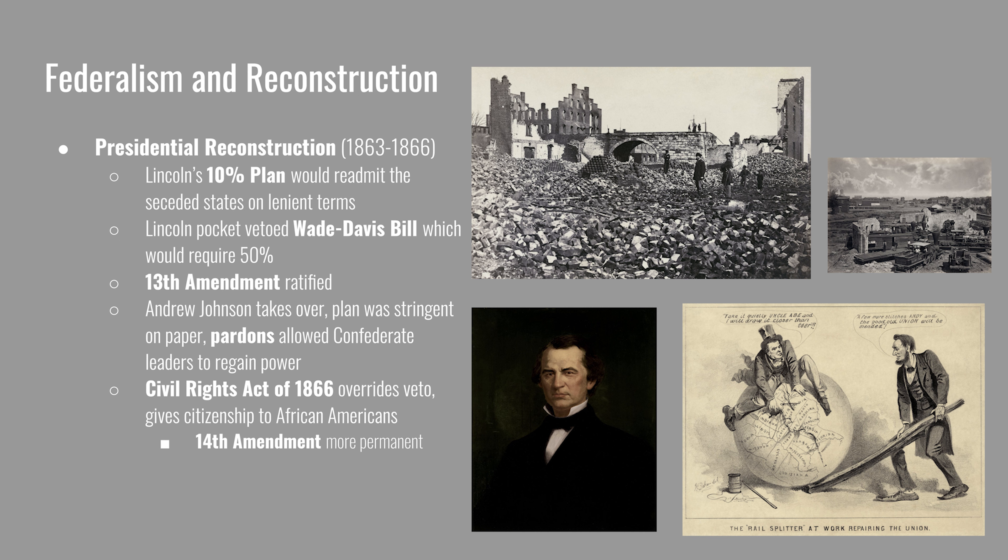Congress grew annoyed with Andrew Johnson and took control over Reconstruction. In June of 1866, Republicans in Congress refused to seat the Southern representatives and senators who had been re-elected — many were former Confederate officials. Congress then passed the Reconstruction Acts of 1867, dividing the South into five military districts overseen by Secretary of War Edwin Stanton. Before states could be re-admitted and the military removed, each state had to adopt the 14th Amendment and amend their state constitutions to protect voting rights for African Americans.